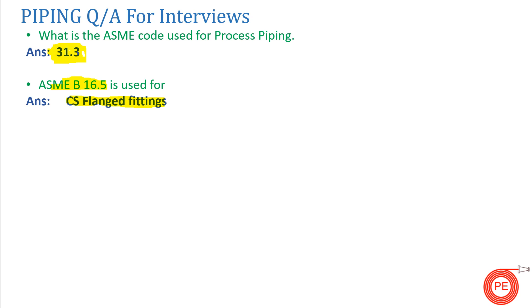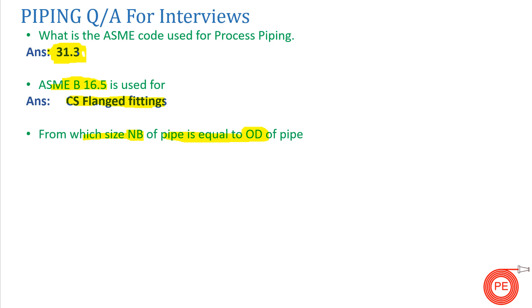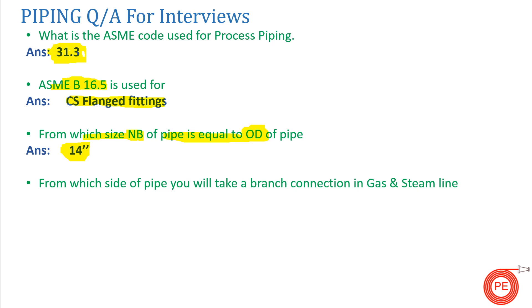The next question is: from which size does the nominal bore (NB) of a pipe become equal to the outside diameter (OD) of the pipe? The nominal bore is not equal to the outside diameter up to a certain size. From 14-inch size, or DN 350, the OD of the pipe becomes equal to the nominal bore.